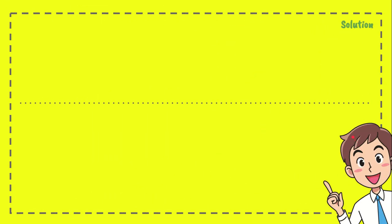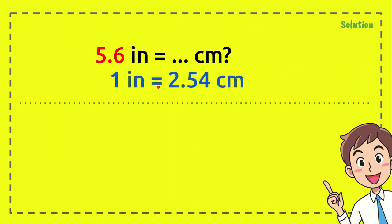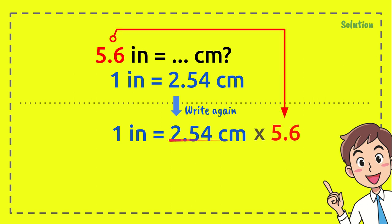Now here is the solution. First, write the question and then write the formula. After that we need to write the formula again and put it here. Now we have the formula here, and after that we need to multiply 2.54 centimeters with 5.6 and 1 inch with that number as well.